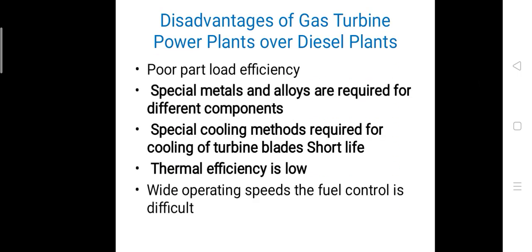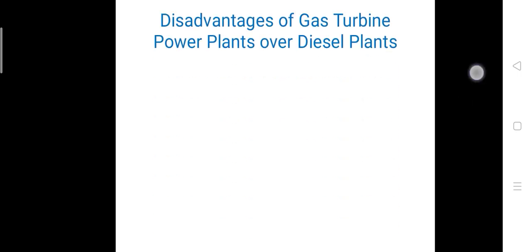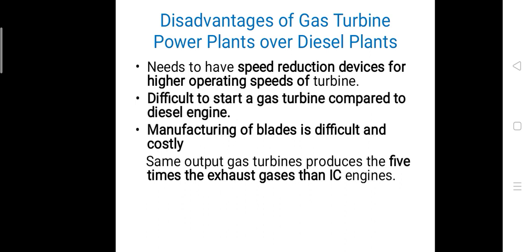Now we are going to see the disadvantages of gas turbine power plants over diesel plants. These include poor part load efficiency, special metals and alloys required for different components, special cooling methods required for turbine blades with short life, low thermal efficiency, difficult fuel control at wide operating speeds, and speed reduction devices needed for higher operating speeds.